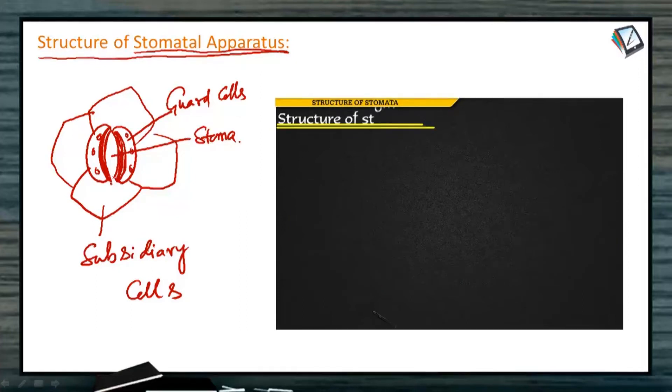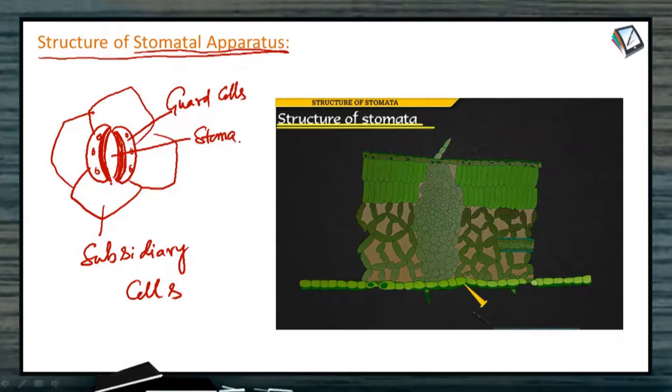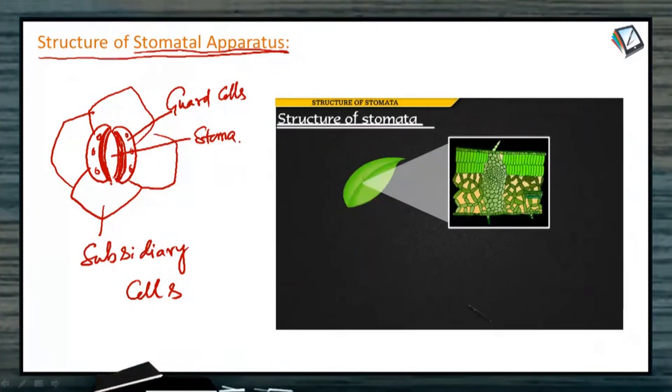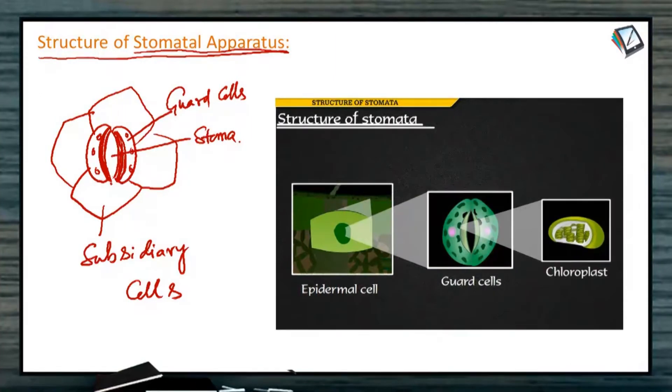Look at the animation. Structure of Stomatal: upper epidermis, lower epidermis, surface of the leaf, epidermal cell, and here is Stomatal Apparatus. These are guard cells. The wall of the guard cells is thick towards the center, that is opening stoma,